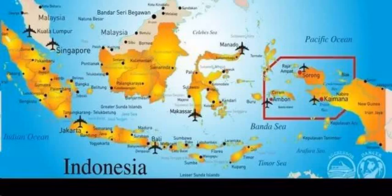In Indonesian law, the term 'city' is generally defined as the second-level administrative subdivision of the Republic of Indonesia, equivalent to a regency. The difference between a city and a regency is that a city has non-agricultural economic activities and a dense urban population, while a regency comprises predominantly rural areas and is larger in area than a city.